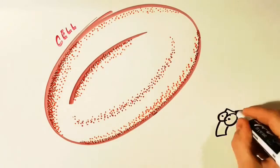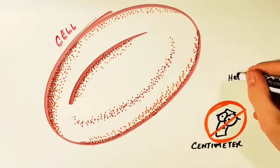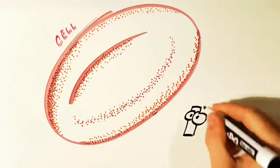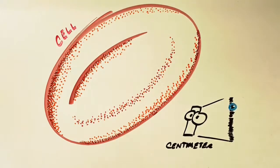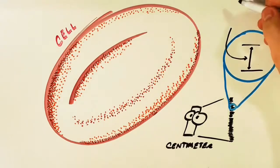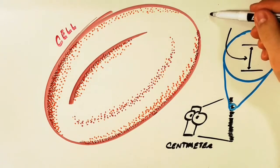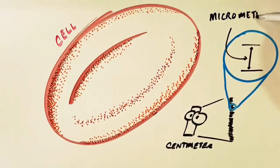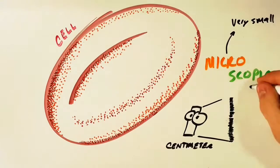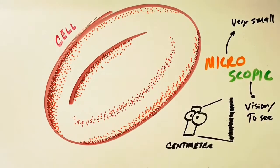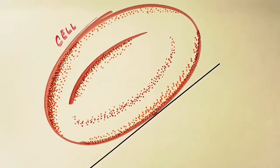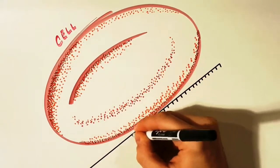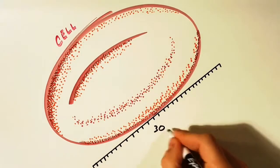A cell is so small that even a centimeter is too big to describe it. By using the power of 10, we can take our centimeter and slice it into even smaller pieces. What if we sliced it into so many pieces that each one was only one millionth of a meter across? We call this a micrometer. This brings us to the word microscopic — 'micro' means very small and 'scopic' means vision or to see. If we line them up, our cell is about 30 micrometers across.